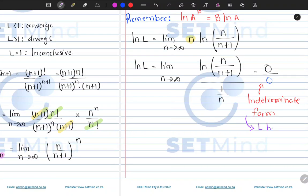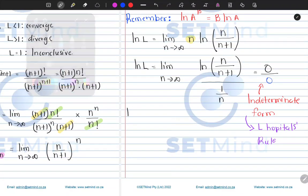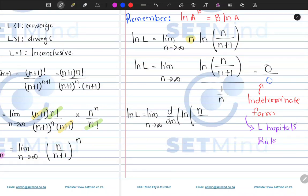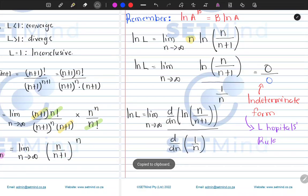Since we have an indeterminate form of 0 over 0, we apply L'Hôpital's rule. L'Hôpital's rule says that when you get 0 over 0 or infinity over infinity, you differentiate the numerator and denominator separately and re-evaluate. So ln of L will be the limit as n approaches infinity of the derivative of the numerator, 1 over n plus 1, divided by the derivative of the denominator, which is 1 over n.